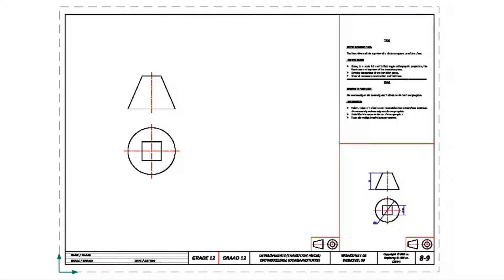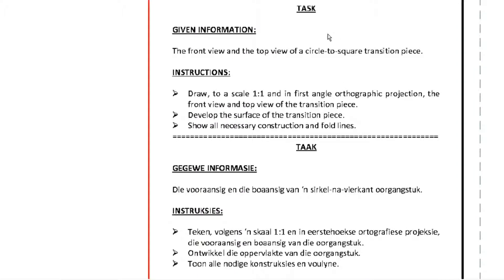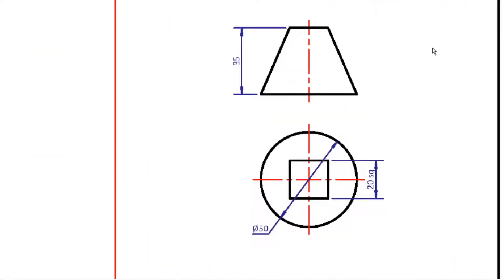Good afternoon Grade 12s. Today's exercise is on page 8 and 9 — the development of a transition. They give you the front and top view of a circle-to-square transition piece, and this time it's in reverse from last time: the base is a circle and the top is a square. The scale remains the same and all constructions must be left on the diagram. The height is 35, the radius is 25, and the top opening is a square that's 20 by 20.